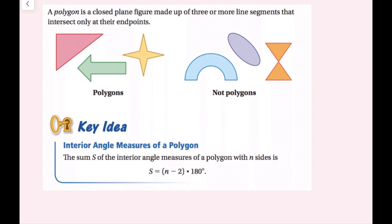The interior angle measures of a polygon: the sum s of the interior angle measures of a polygon with n sides is s equals (n minus 2) times 180 degrees. That's how to find the total number of degrees in a polygon.